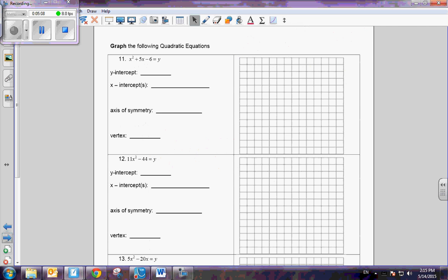Now let's talk about the graph, and then I'll let you complete the rest on your own. So the first problem, x squared plus 5x minus 6 equals y. Now I have some tools that I can use to figure this out. So for y-intercept, I will always let x equal 0. So if I let x equal 0, I get 0 squared plus 5 times 0 minus 6 equals y. So therefore, y would be negative 6. Now we always write the y-intercept as a point.